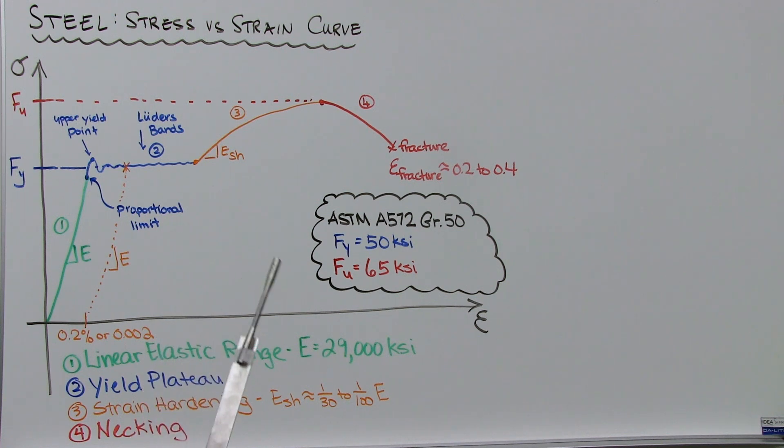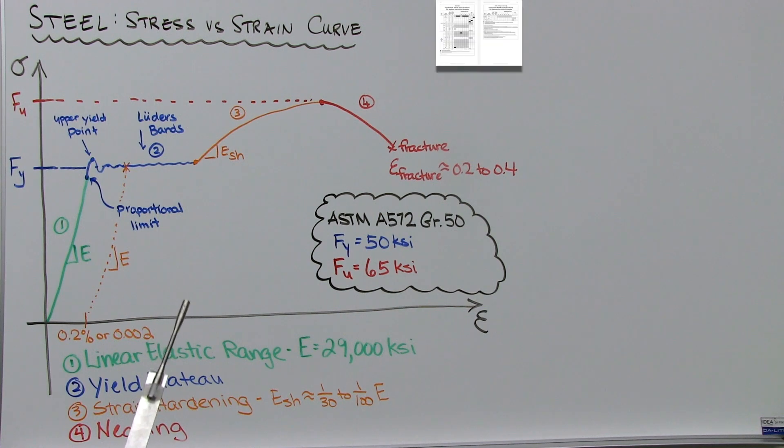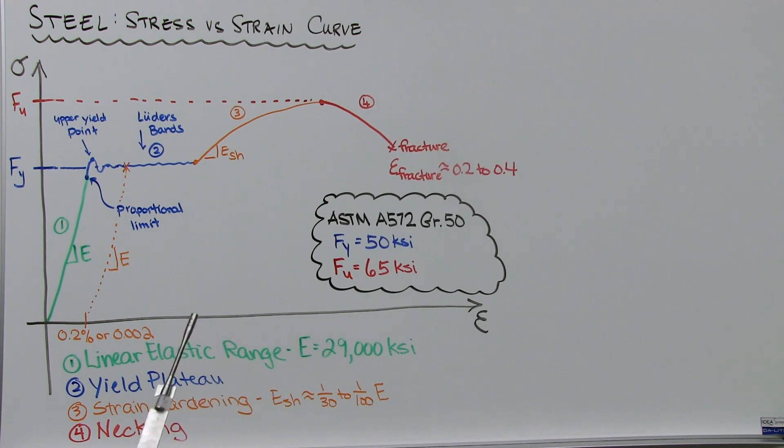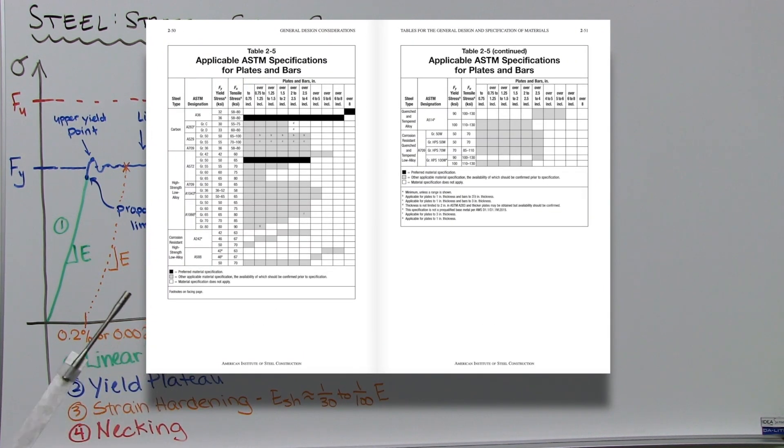Me, I'm a high-strength, low-alloy man, or ASTM A572 grade 50. But structural steel can come in a variety of grades. For a full listing for structural shapes, check out AISC Table 2-4. And for plates and bars, check out AISC Table 2-5.